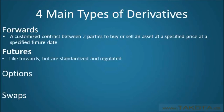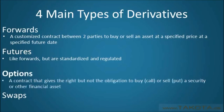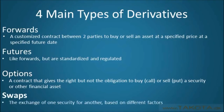Futures contracts are fundamentally similar to forwards. However, unlike forwards, they are standardized and regulated so that they may be traded on a futures exchange. Futures are often used to speculate on commodities. An options contract is a contract that gives the right, but not the obligation, to buy — call — or sell — put — a security or other financial asset. Finally, a swap is fairly self-explanatory and refers to the exchange of one security for another based on different factors.